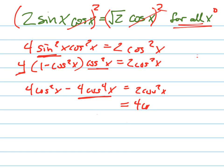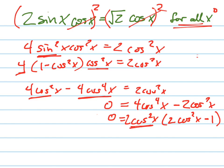That way this will become a positive. So that's four cosine to the fourth x minus two cosine squared x, because I subtracted this, equals zero. Now I can factor out a two cosine squared x. And I'll be left with a two cosine squared x minus one. Set this equal to zero.